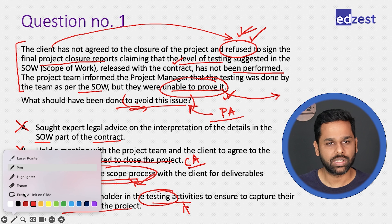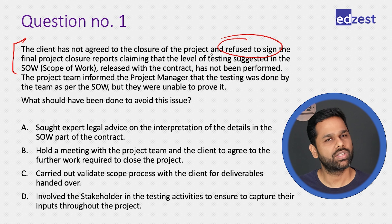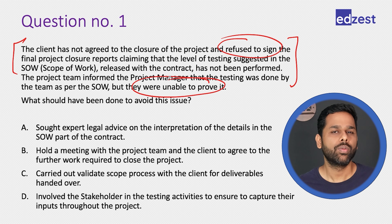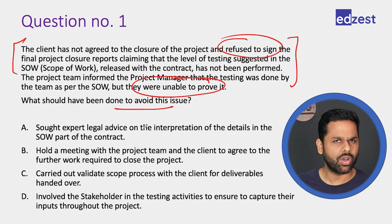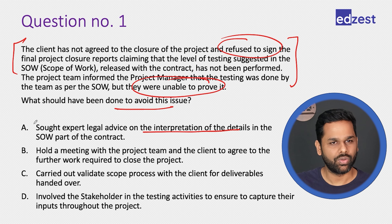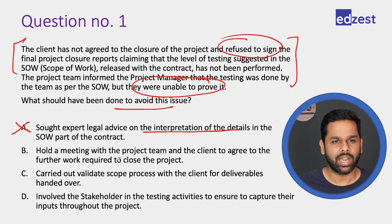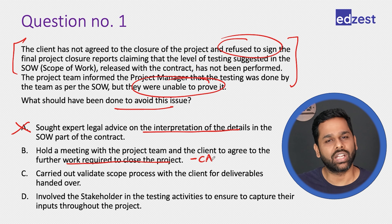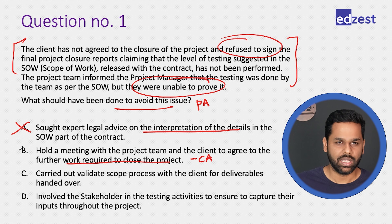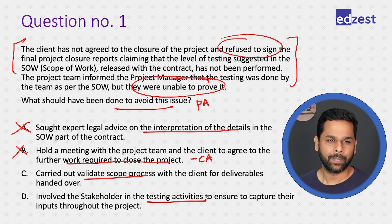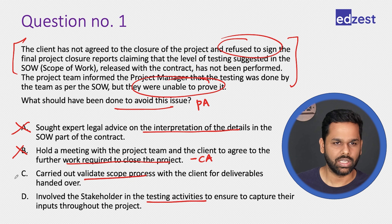C is better than D. In this question there was an issue — the refusal to sign. The reason was the team were not able to prove it. Option A talked about a different issue altogether, so we eliminated it. Option B talked about a corrective action, not a preventive action as asked. Option C talked about following a process. Option D gave a straight-away solution — we don't know whether that solution is the best. Following a plan and process is much better. So C is the answer.